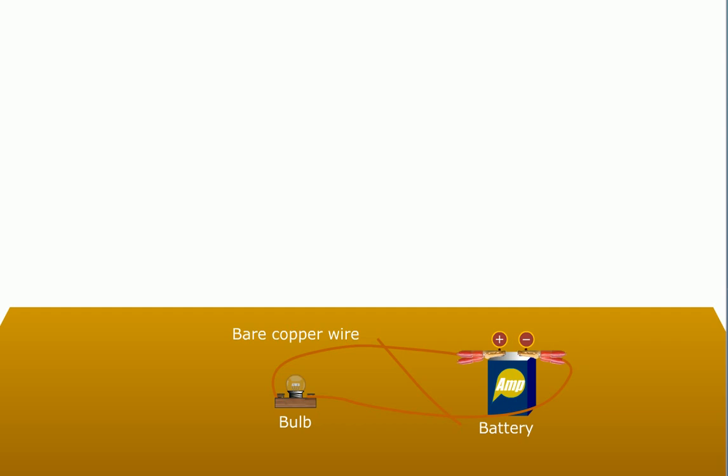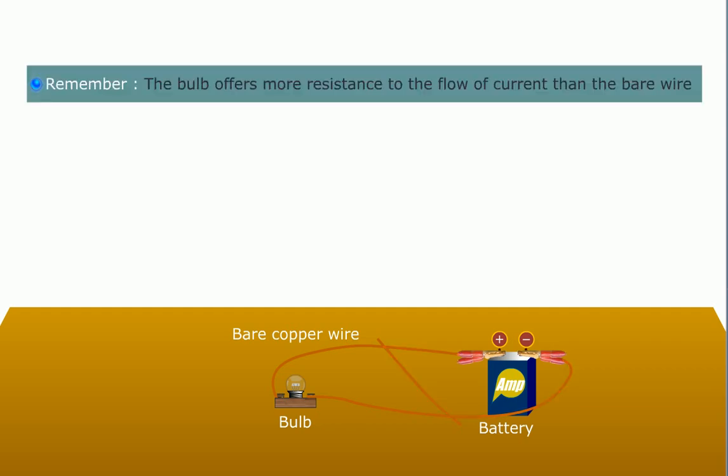This doesn't mean that the electricity took a shorter course. It just took an easier path of low resistance. Remember, the bulb offers more resistance to the flow of current than the bare wire.